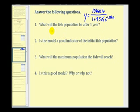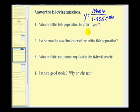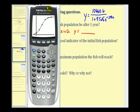The first question is what will the fish population be after one year according to our model? Remember that x represents the number of months and y represents the population in thousands. So if we want to know what the population is after one year, we want to know when x is equal to 12 for 12 months, what would y be equal to?